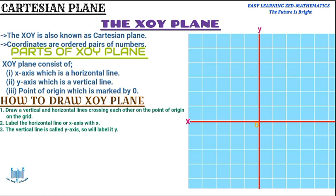Next, we label the X axis and Y axis with numbers. Starting with the X axis, I'll label the positive numbers on the right side of the Y axis. Remember to keep equal intervals between numbers. I'll label 1, 2, 3, 4, 5 going to the right.